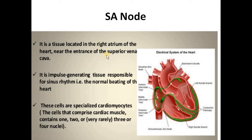The sino-atrial node or pacemaker evolved from the fish's sinus venosus in mammals. The pacemaker functions as a pulse generator — it generates electrical impulses and helps the heart beat.